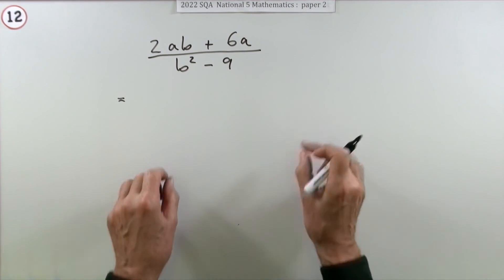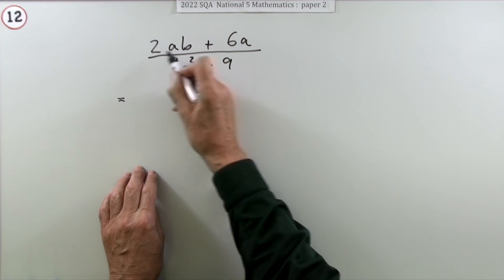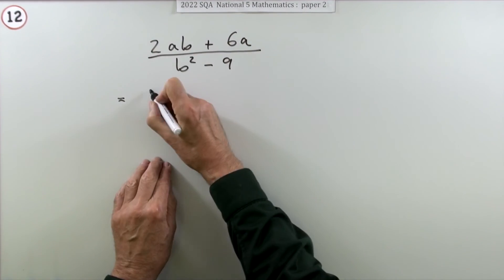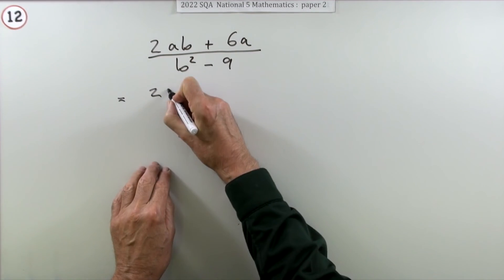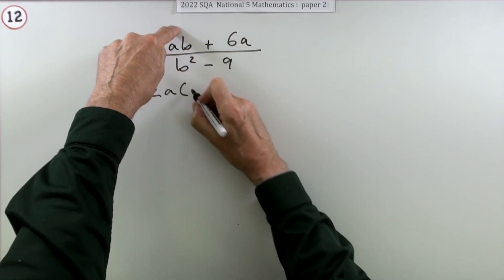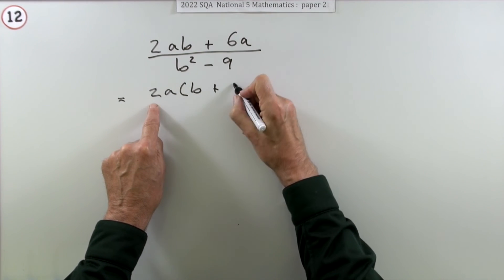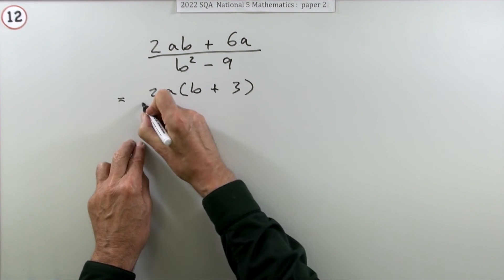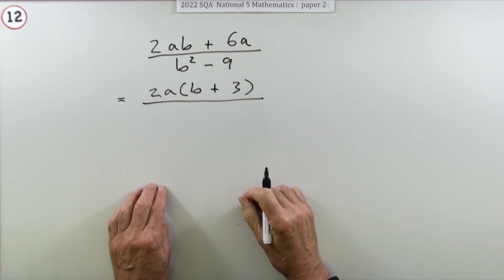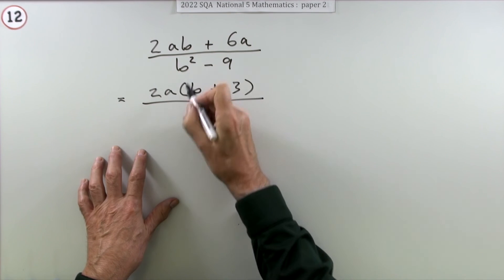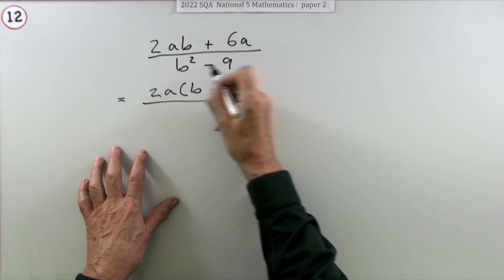What have we got on top? There's a 2 in common, I'll take that out. There's an a in common, I'll take that out. That leaves just a b plus 3. So I've got 2a(b + 3). So that's the top done.